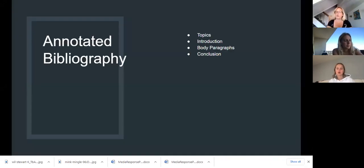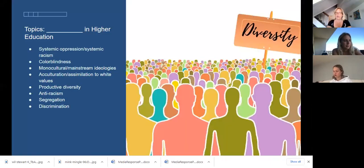The annotated bibliography, I want to talk about topics you can explore and then the structure of it. Any topic that is a focused topic from Barron and Grimm is on the table here. So your lenses are those topics. A lot of you are doing colorblindness or systemic oppression, systemic racism, this idea of writing white or acculturation, assimilation to white values, white culture. Those are things that are in Barron and Grimm that they're focusing on.